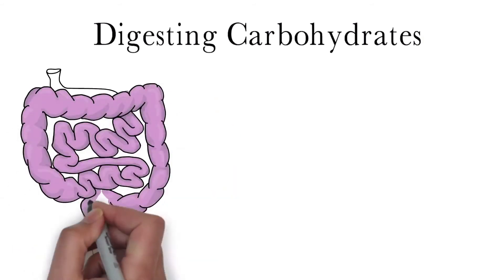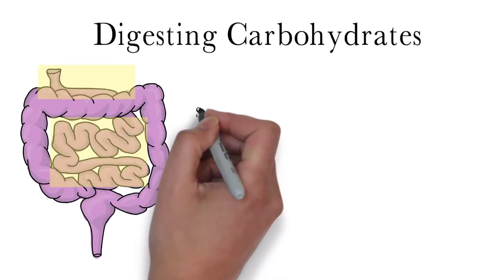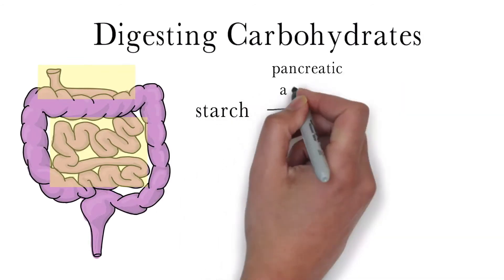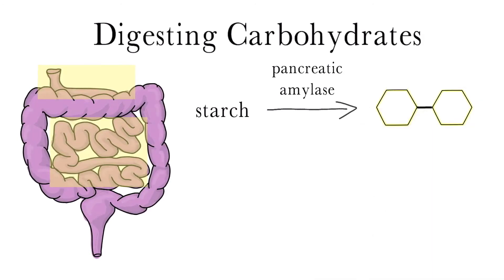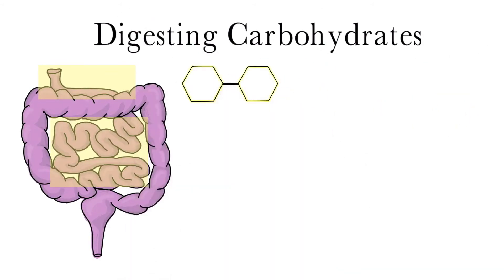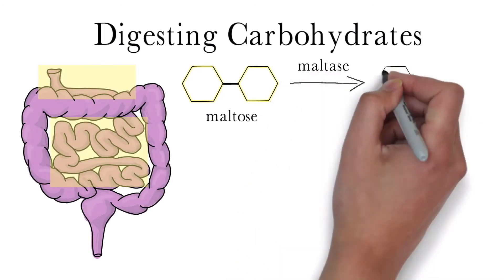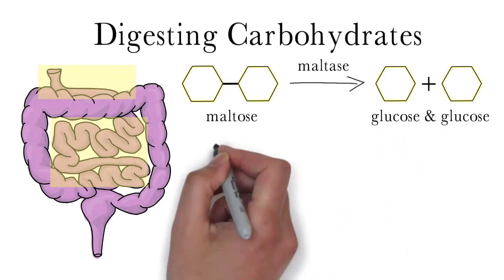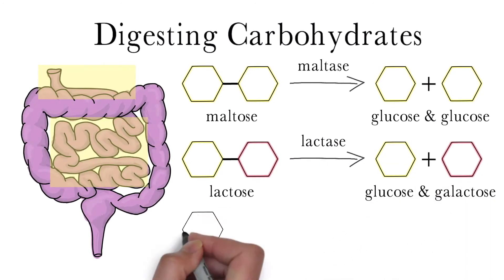Next, the swallowed food makes its way to the small intestine, which is where the majority of carbohydrate digestion occurs. Here, an enzyme called pancreatic amylase continues breaking down starch into smaller polysaccharides and maltose. This occurs until we are left with only maltose disaccharides. From here, specific enzymes break down specific disaccharides into their component monosaccharides. An enzyme called maltase breaks down maltose into two glucose molecules. An enzyme called lactase breaks down lactose into one glucose and one galactose molecule. Another enzyme called sucrase breaks down sucrose into one glucose and one fructose molecule.